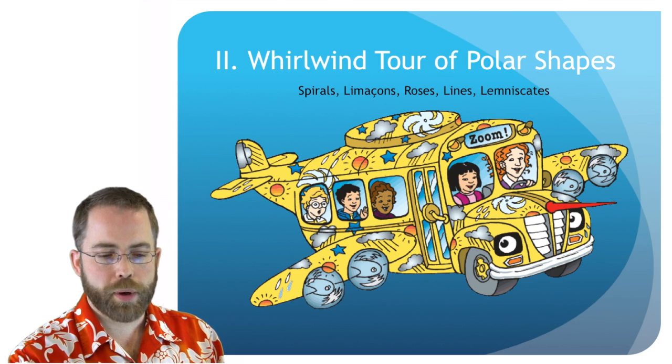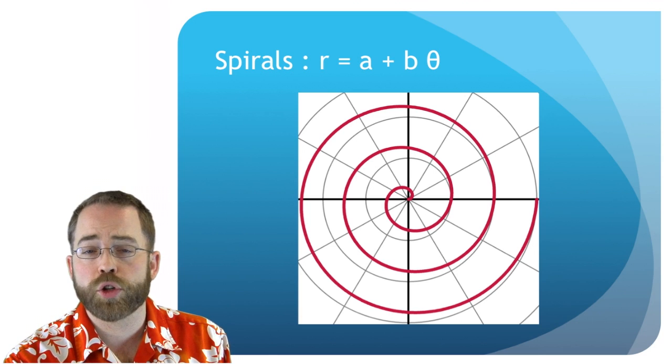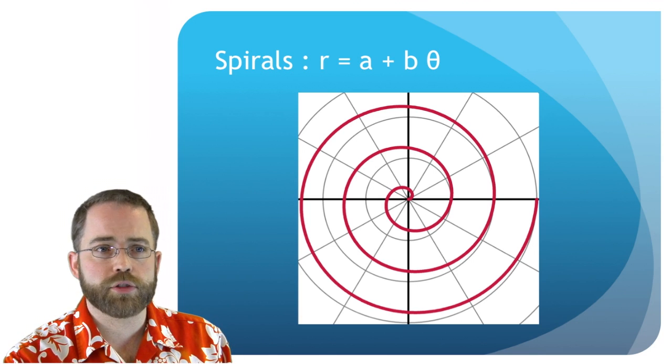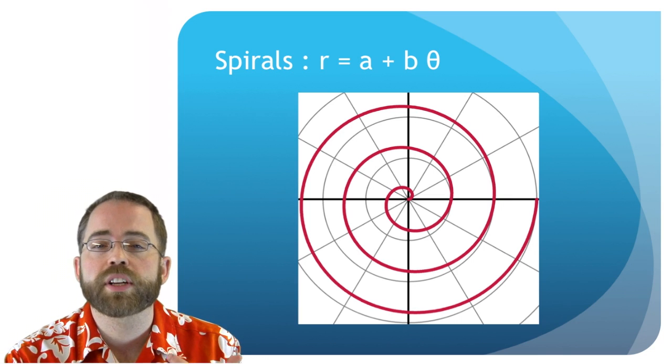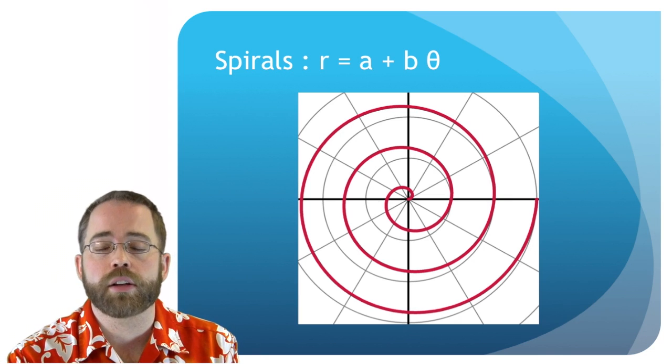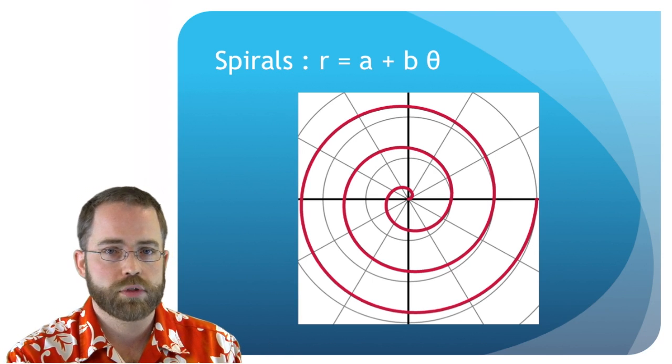All right. So spirals we already talked about. If you've got r in terms of theta and there's no trig function, this is just going to spiral out of control. This is just going to get bigger and bigger and bigger as the angles get bigger and bigger and bigger. These are spirals. Nothing magical there.